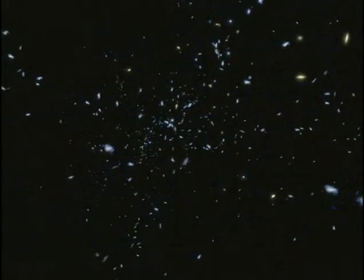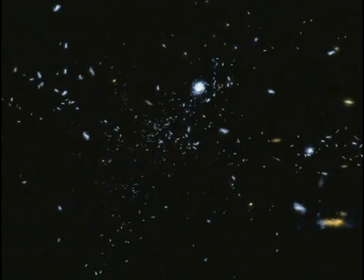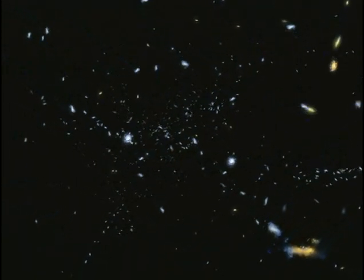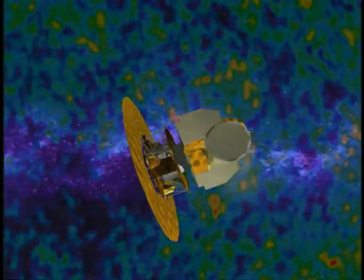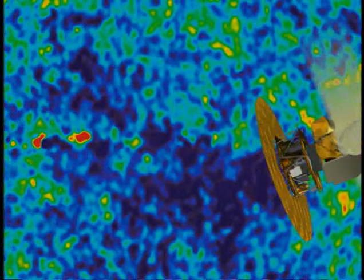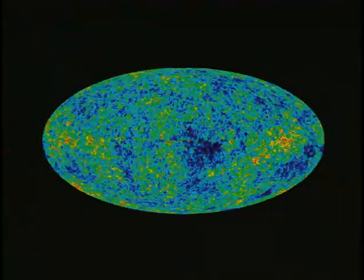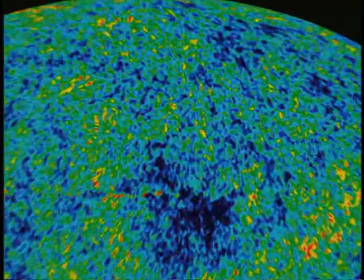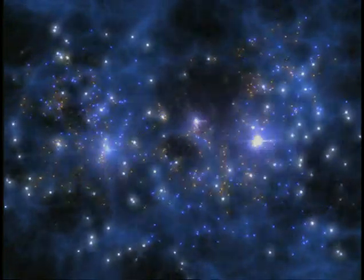The Beyond Einstein program stands on the shoulders of other missions within NASA's Structure and Evolution of the Universe program. Missions like WMAP with its detailed all-sky picture of the remnants of the Big Bang. WMAP has determined the content of the universe, how much atoms, how much cold dark matter, how much dark energy. It's determined the age of the universe quite precisely, the shape of the universe, and is even determining some of the properties of the very earliest moments of the universe.